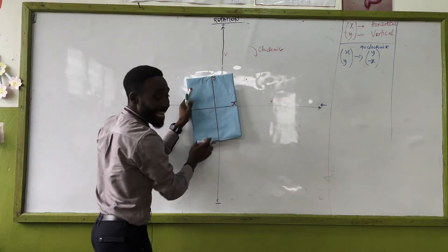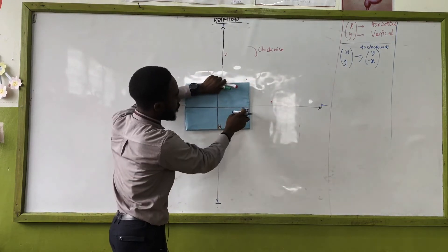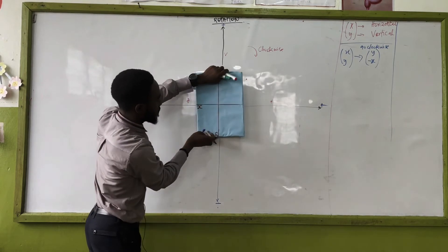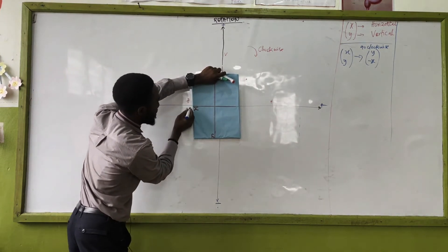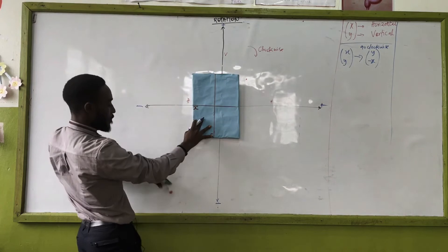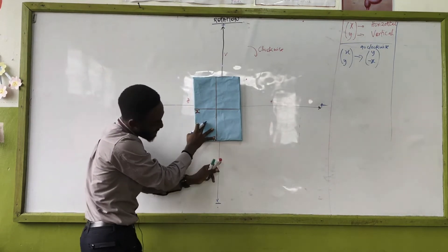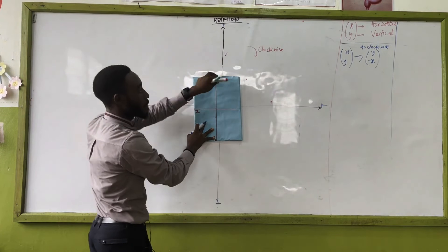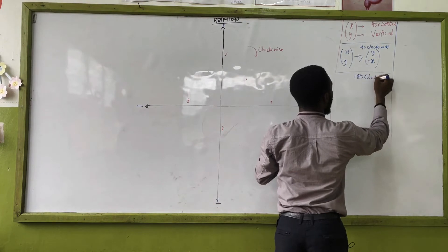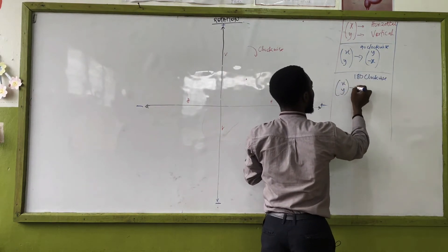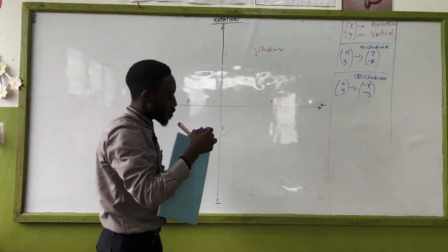Angle 180° means moving twice — 90 then 180. When I move twice I reach 180°. At that point, horizontal is negative x and vertical is negative y. So 180° clockwise: (x, y) → (-x, -y).